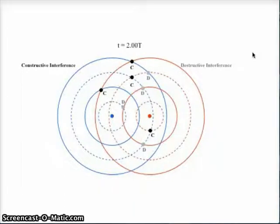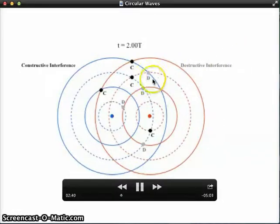We can also look at locations of destructive interference. And these are locations where a crest, a solid line from one wave, meets a trough, a dashed line, of another wave.